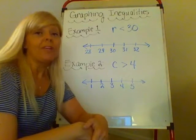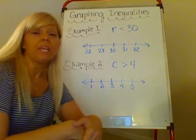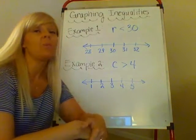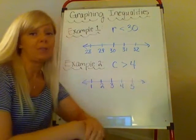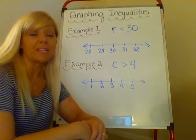So it could be a half, it could be one and eight tenths, it could be 29.9, it could be 29.99, it could be 29.9 with a million nines after it. So it could be a number of numbers that are less than 30.